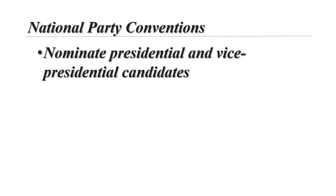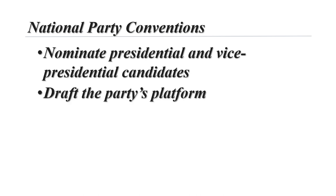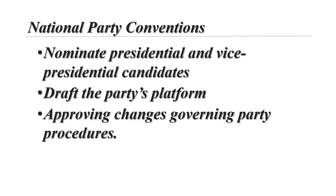Now we move toward the party conventions. In the nation's first 50 years, presidential nominations were controlled by congressional caucuses, named the King Caucus. Party conventions ultimately replaced these. State party leaders picked delegates from the 1830s up until World War II; now primaries and caucuses select the delegates. The delegates draft the party platform — a statement of party philosophy, principles, and policy positions. The national party convention's three most important activities are to nominate the presidential and vice presidential candidates, draft the party platform, and approve changes that will govern the party until the next convention.